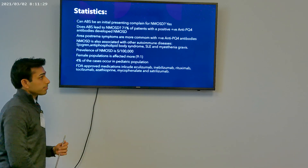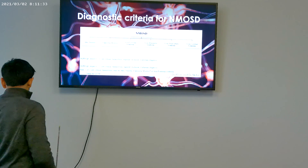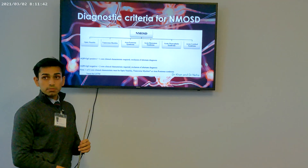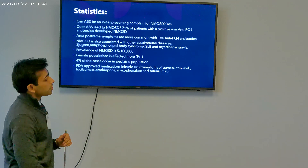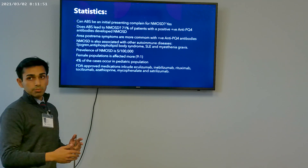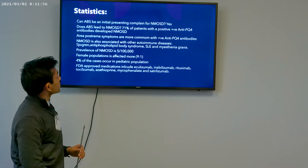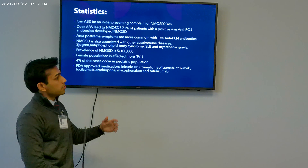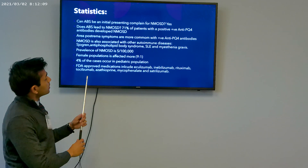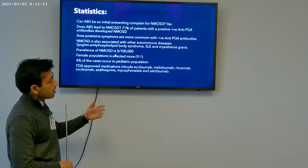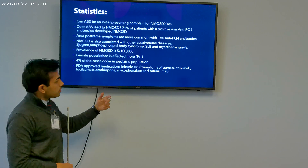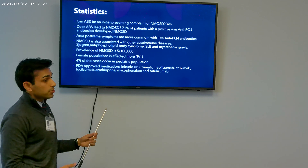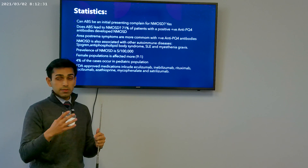Regarding statistics: optic neuritis and transverse myelitis are the initial presenting complaints of NMOSD, but ABS can also be the presenting complaint. In about 70% of patients who developed NMOSD, they had acute brain stem syndrome and were also anti-AQP4 positive. Area postrema syndrome is more commonly found with anti-AQP4 antibodies. NMOSD is also associated with other autoimmune conditions like myasthenia gravis, SLE, or antiphospholipid antibodies. Prevalence is only 5 per 100,000 cases, and the female-to-male ratio is 9:1.